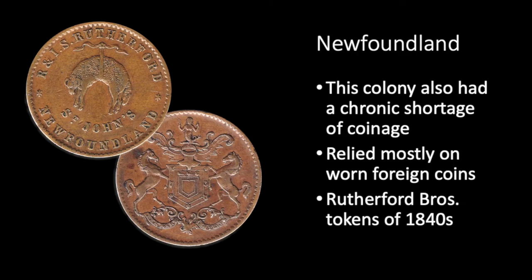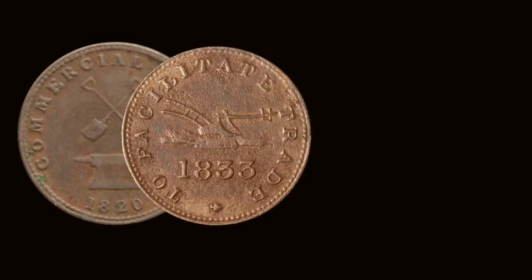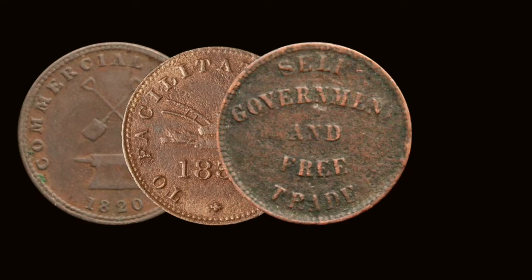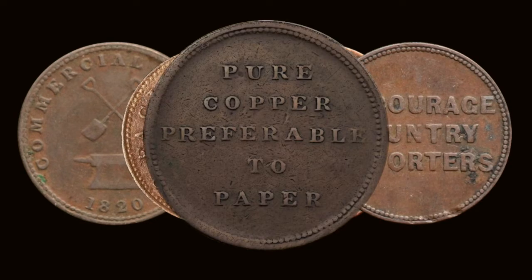Newfoundland also experienced coin shortages, and by the 1840s one of the better tokens in circulation were the tokens of Rutherford Brothers. Slogans on tokens were a major vehicle for the sentiments of the time. Some expressed justification for token issues, like 'commercial change' or 'to facilitate trade.' Some were more political, like 'self-government and free trade' or 'encourage country importers.' Some expressed the common distrust of paper money with slogans like 'pure copper preferable to paper.'